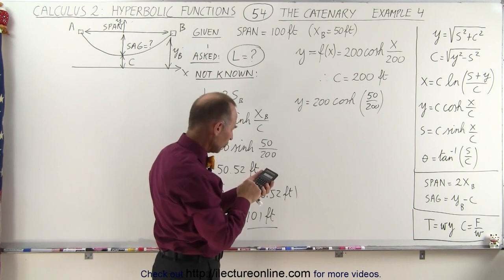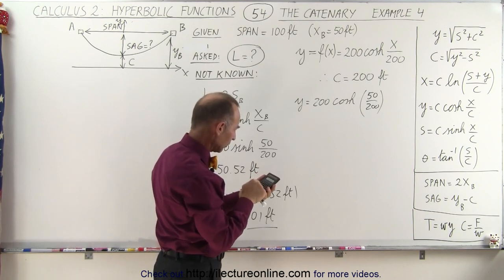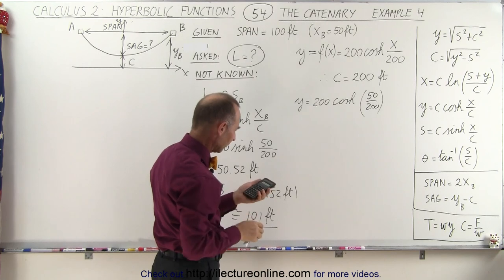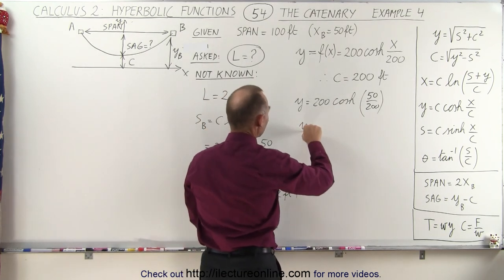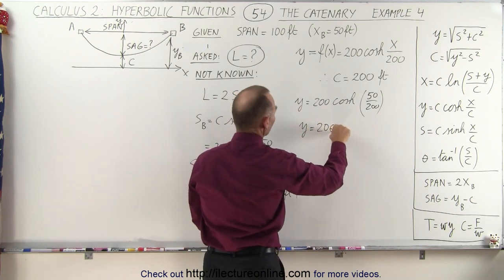So that will give us a total value for y. So that would be 0.25. Take the hyperbolic cosine times 200. That gives us 206.3.